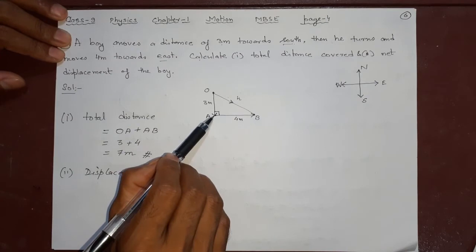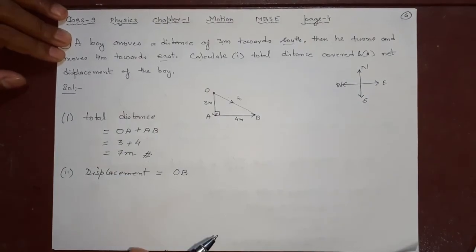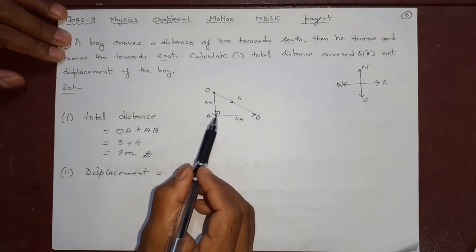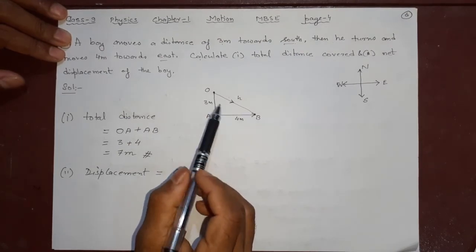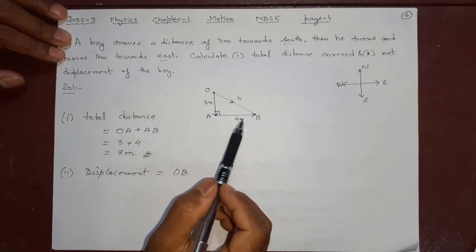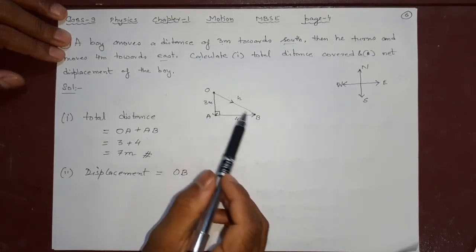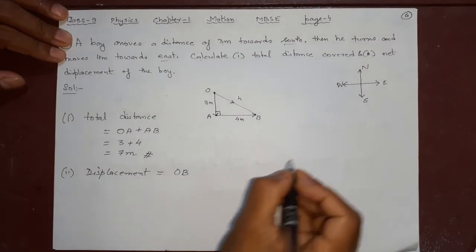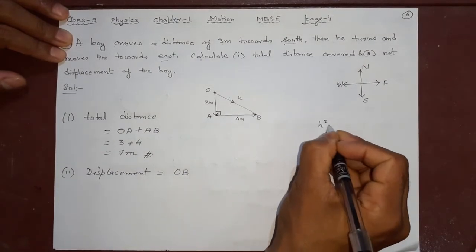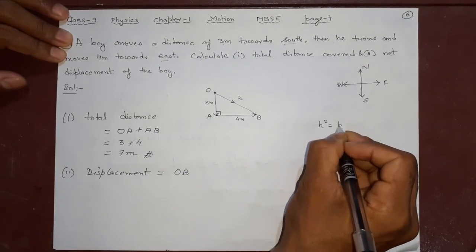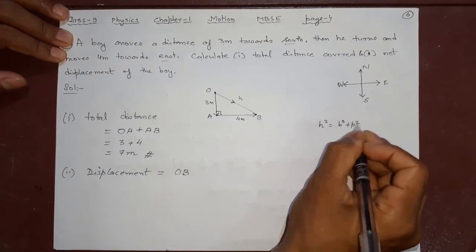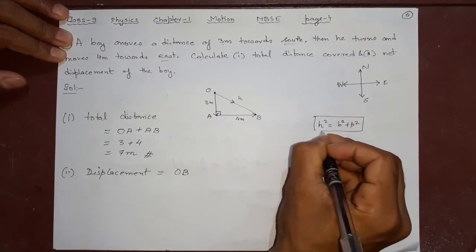In a right triangle, right triangle means a triangle where you have 90 degrees. There you will find that the base is there, 4 meter. Perpendicular is there, 3 meter. And the hypotenuse is H. So that we need to find.